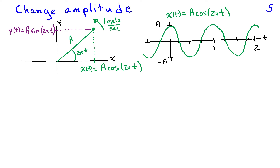The next thing to change is the amplitude — the length of the hypotenuse, or the length of the phasor. Going back to the case where the angle changes at 2πt (one cycle per second), the projection onto the horizontal axis simply scales by the amplitude a. So the sinusoid now ranges from a positive maximum of +a to a negative maximum of −a. In the previous examples, we changed the rate of rotation, or the frequency.